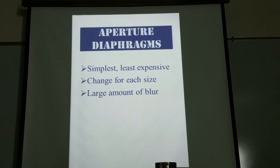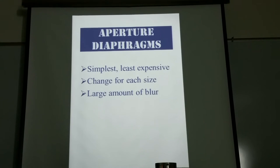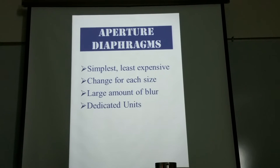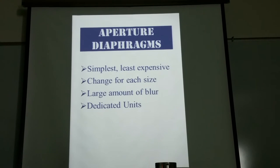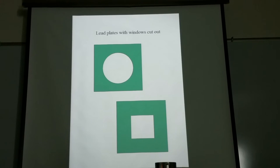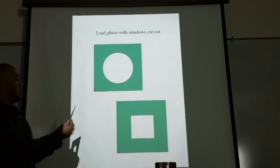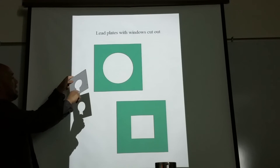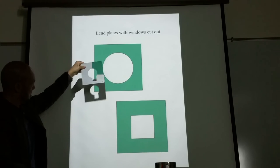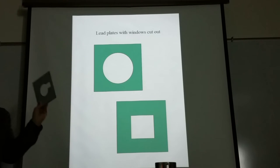Another problem with the aperture diaphragm is that there remains a large amount of blur on the edges of the beam. Although it controls beam size, it doesn't clean out the edges, which produces penumbra or blur on the radiographic image. Aperture diaphragms are the simplest and least expensive option, but they are constructed for dedicated units only, made for specific special units.